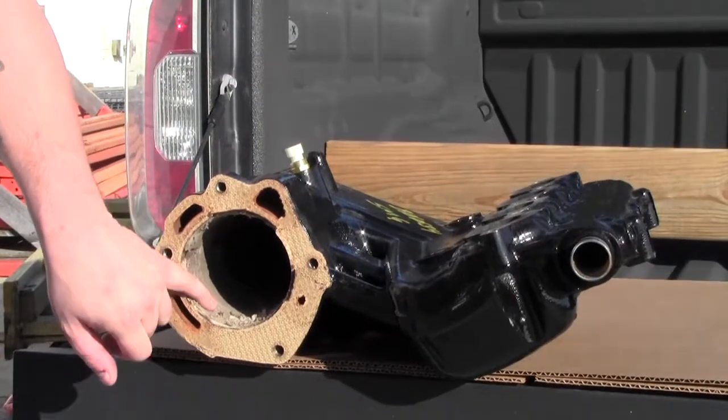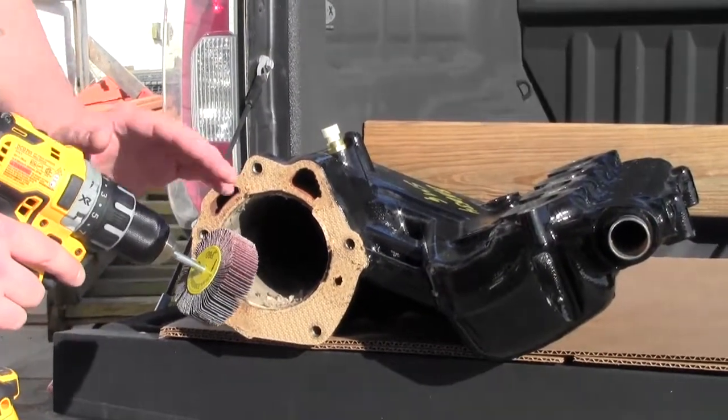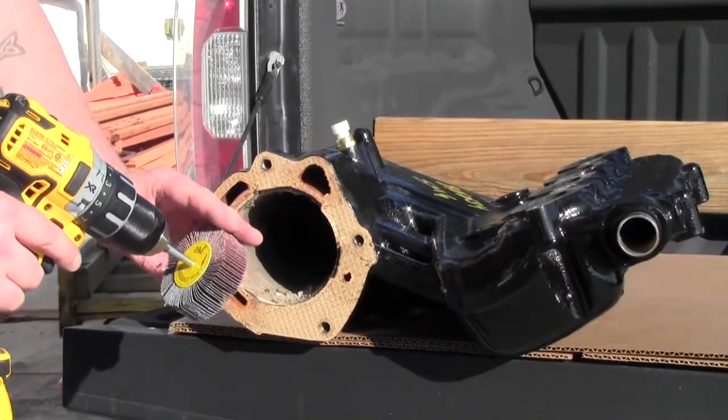To clean out the inside of the manifold, we like to use a drill and then a flap sander. I'm using a 60 grit.